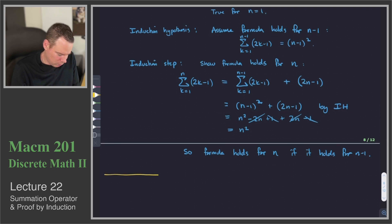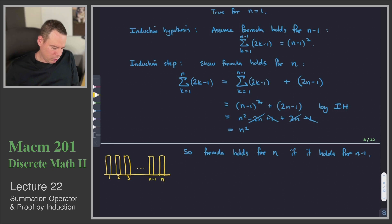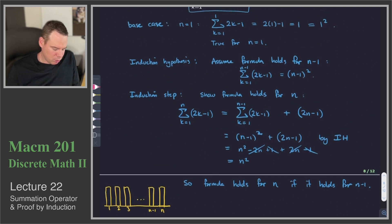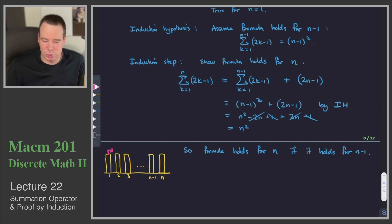I like to think about induction in terms of a bunch of dominoes all lined up. We've got all these dominoes: the first one, second one, third one, and so on, up to the n minus 1 domino and our n domino. The base case means the statement is true for n equals 1, so the first domino is going to fall over.